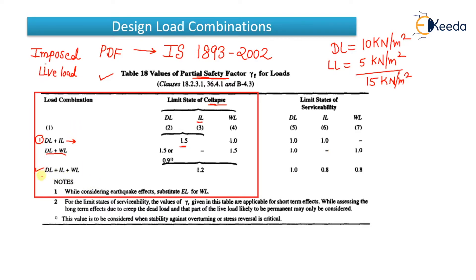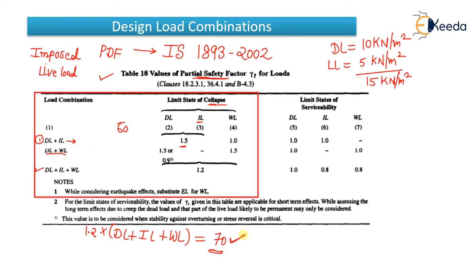The last combination is dead load plus imposed load (live load) plus wind load, and all of this multiplied by 1.2. You calculate a value from each combination, and whichever gives the highest value is the critical one. For example, if one combination gives 70 and the first combination gives 60, then 70 is the critical load and you design the structure for that.